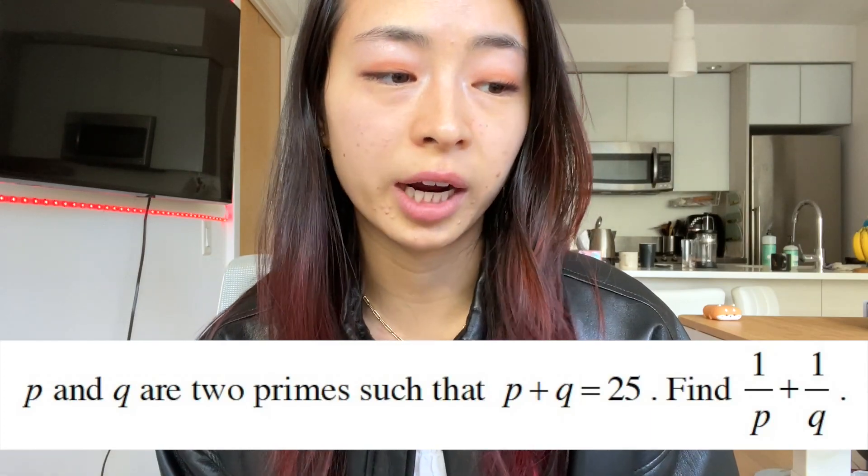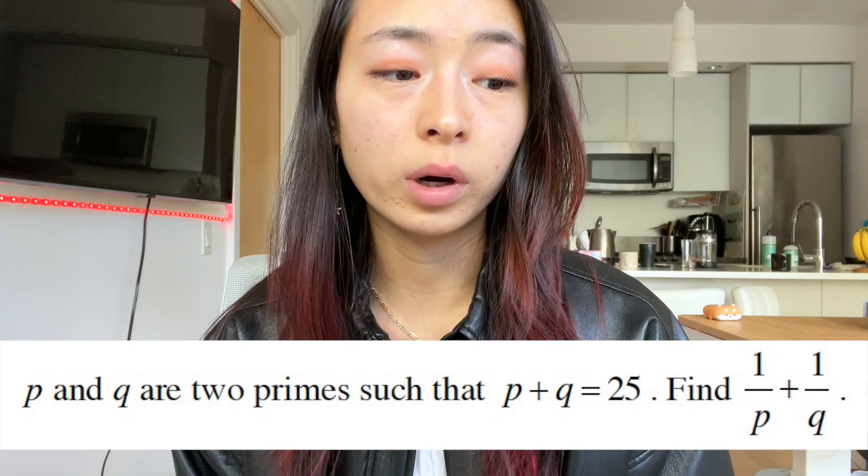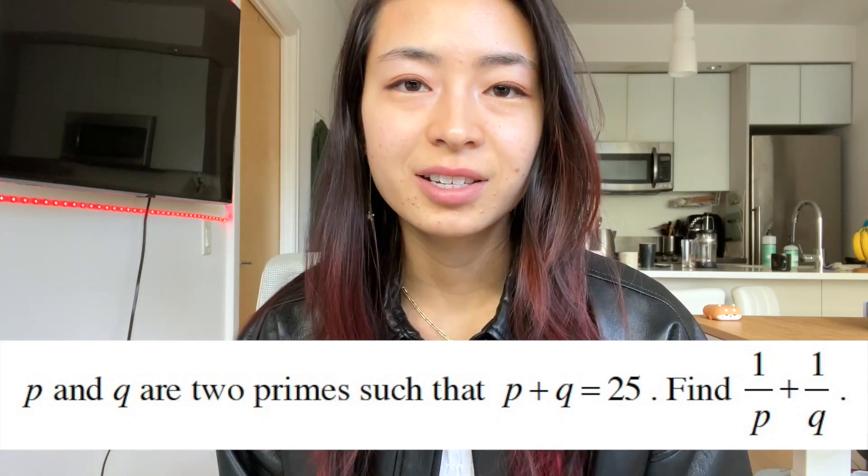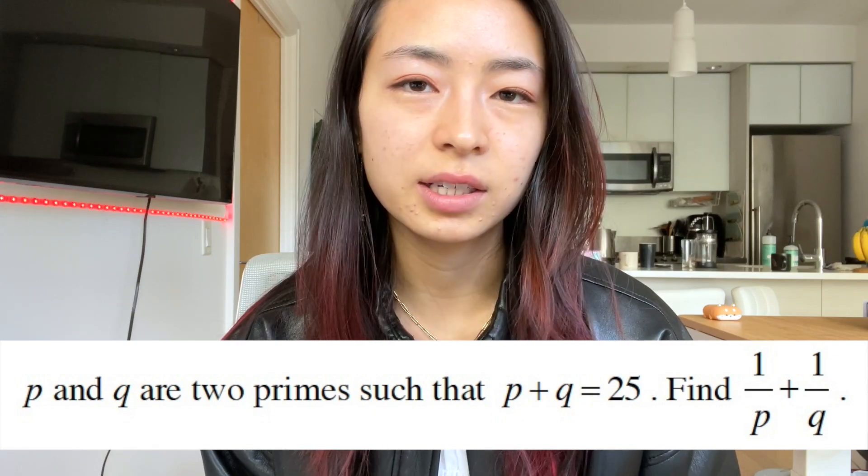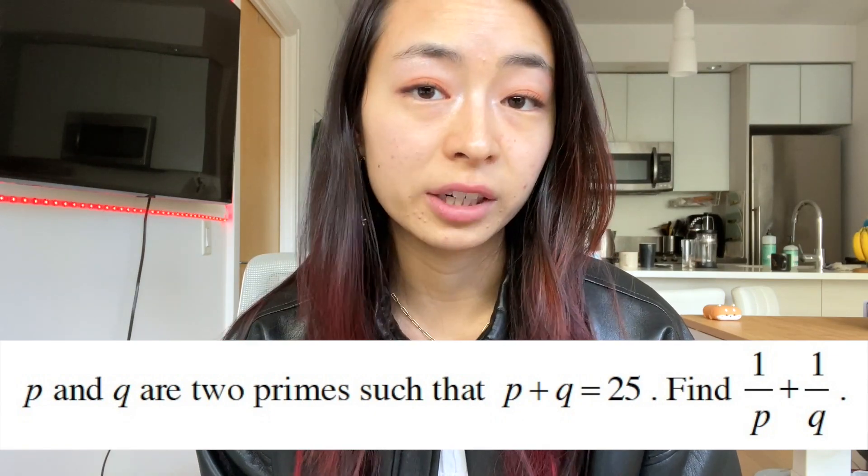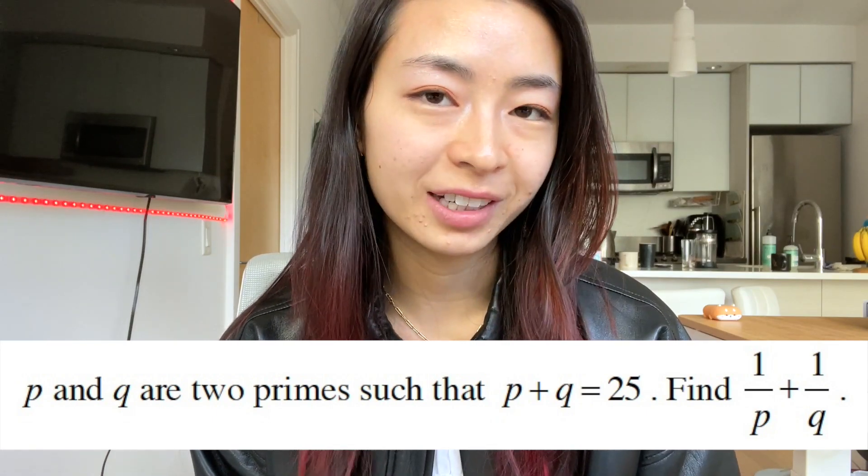P and Q are two primes such that P plus Q equals 25. Find 1 over P plus 1 over Q. So looking at this problem, what do you think so far? Is there anything from the information given where you can already deduct something about P and Q? Think about it.